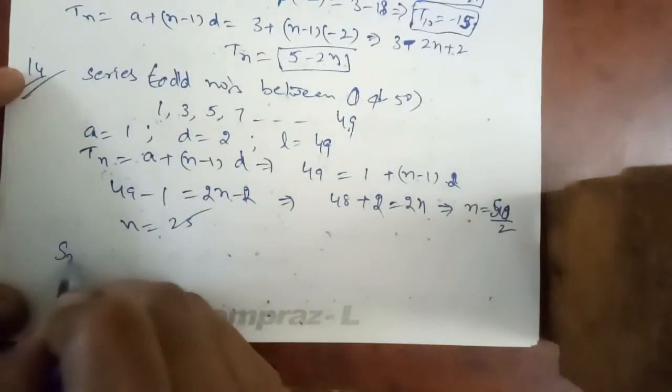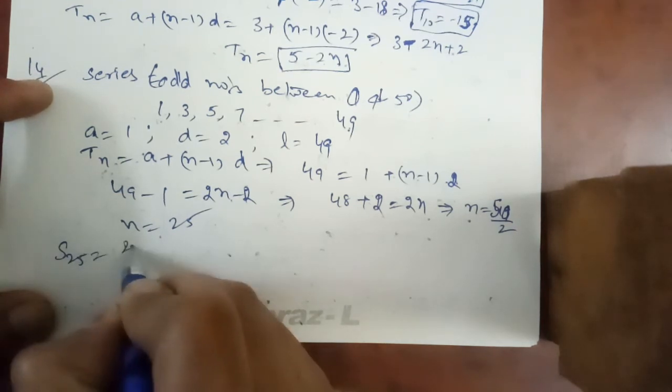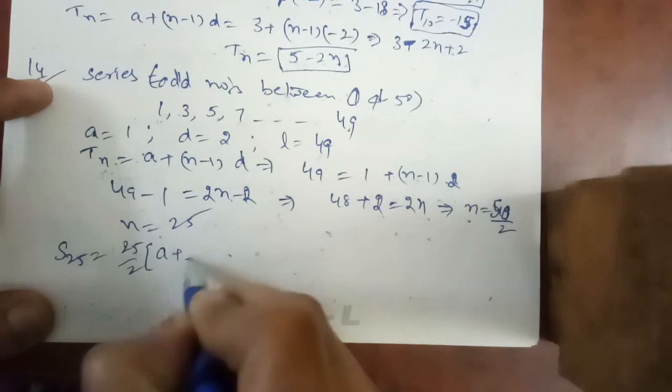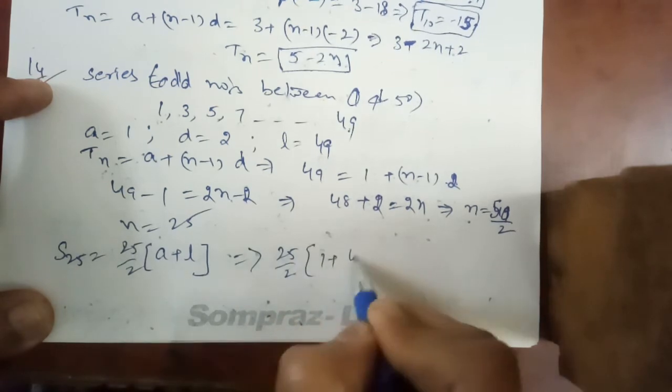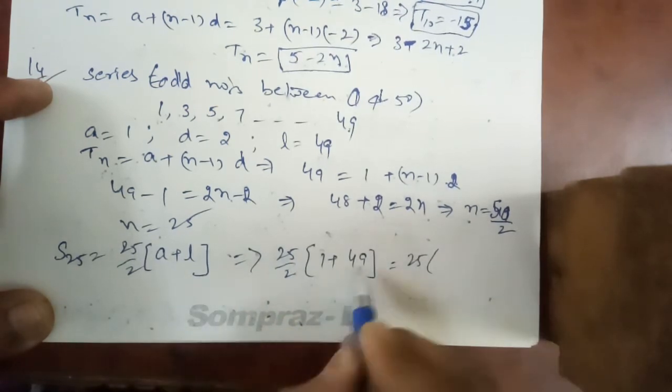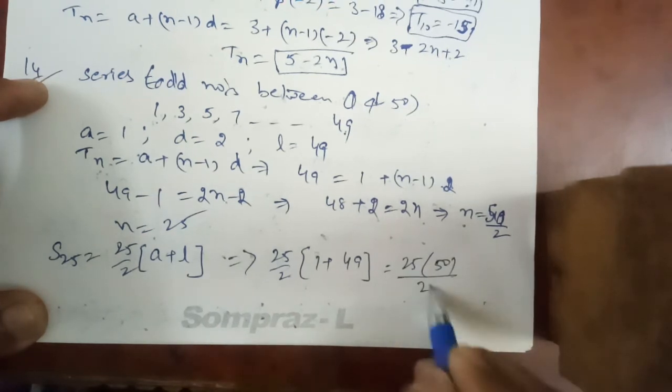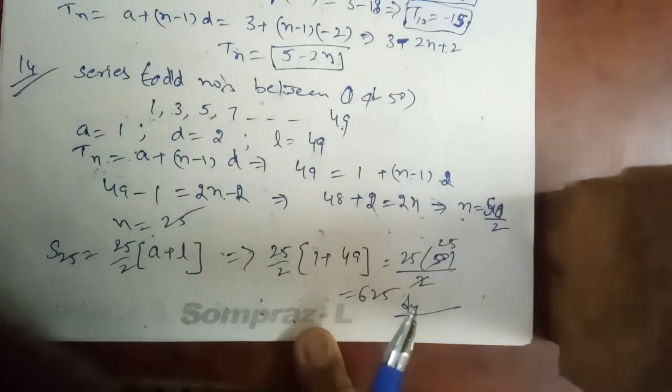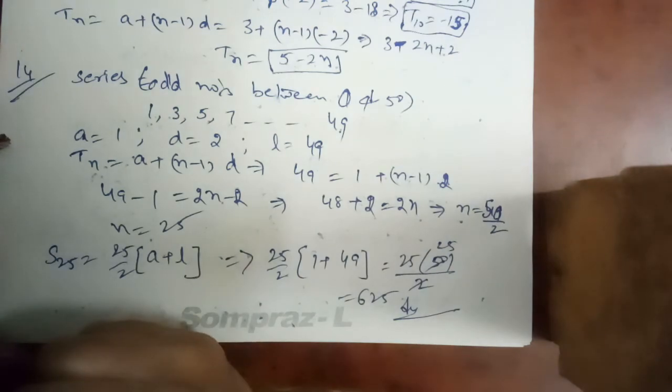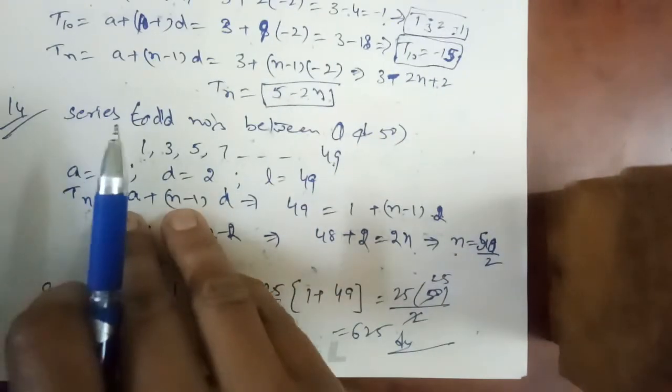So according to this, S25 is equal to 25 by 2 into a plus L. Since last term is given, we can use the second formula directly. 25 by 2, 1 plus 49. 25 into 50 by 2. Its answer will be 625. Question number 14, right, 625. And I explain one more question, question number 15th of this exercise.